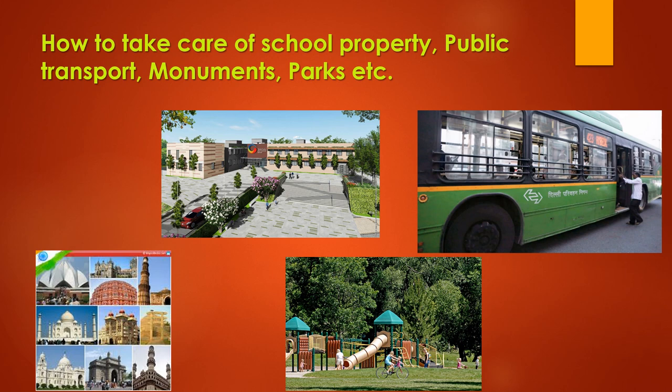Let's see how we can take care of some public properties. First, school property. A school provides facilities that are used by children and teachers — it is a property which belongs to all of us. We should not scribble on school walls, should not scratch the desks or write names on them, and should always throw waste in the dustbin. Children should switch off fans and lights when not in use, and the school playground should always be kept clean. By this way, we can take care of school property.